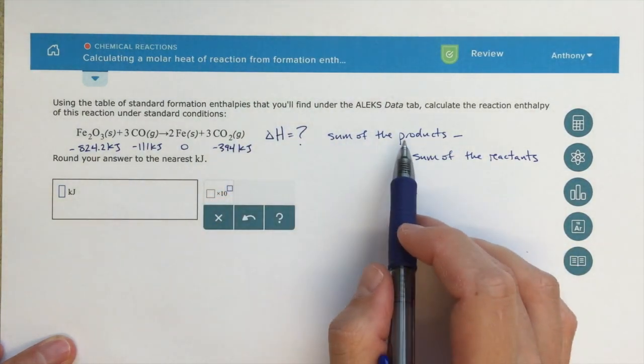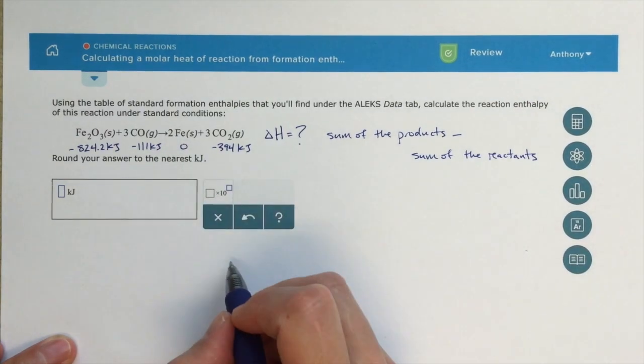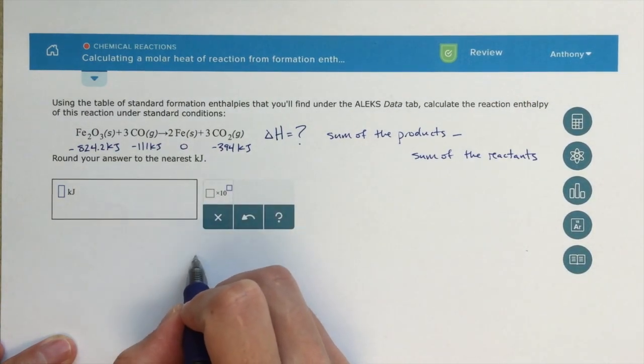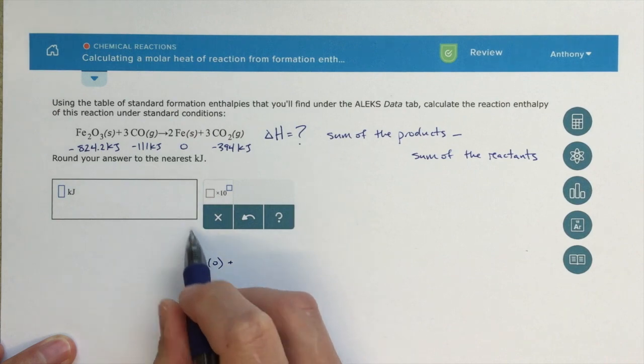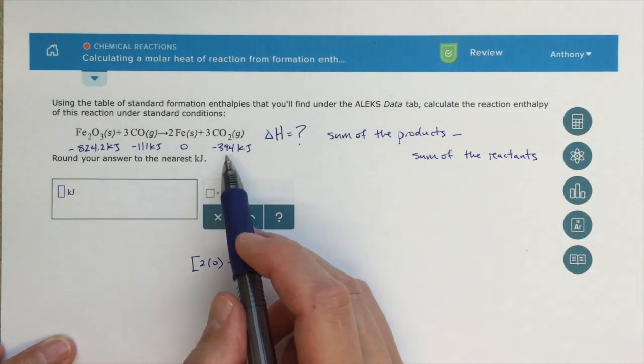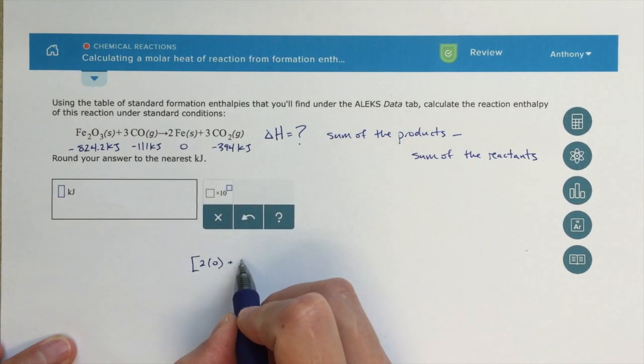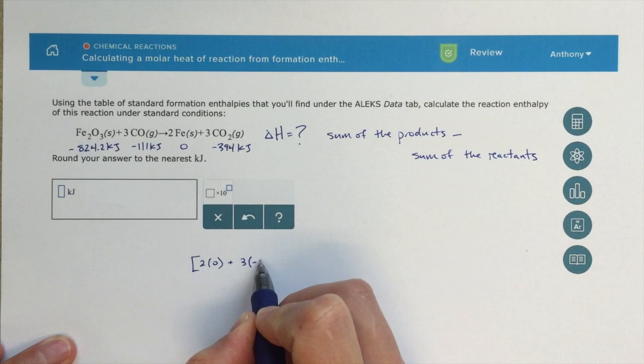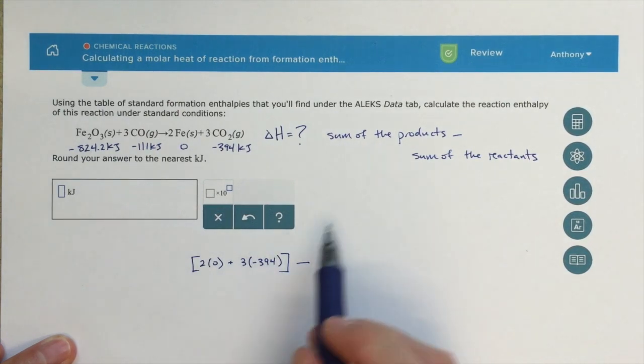So the next thing I'm going to do is add up the sum of the products. So sum of the products for iron is obviously going to be zero, right? But let's go ahead and write that out. So my sum of my products is going to be 2 times zero, and I'm using this 2 here to indicate that I've got 2 moles of that iron because this energy is per mole. Not really that relevant for iron, but very relevant for CO2. 3 times minus 394 kilojoules.